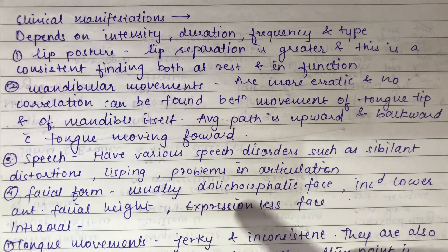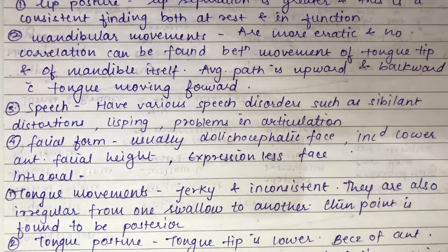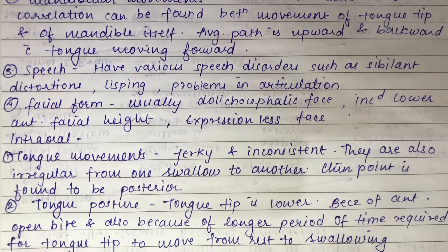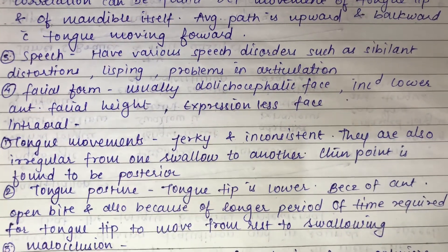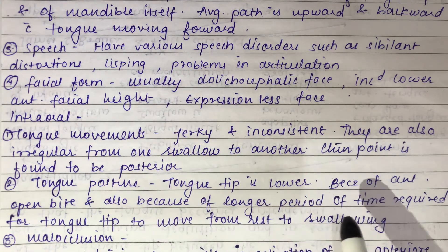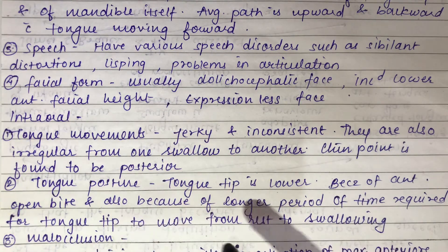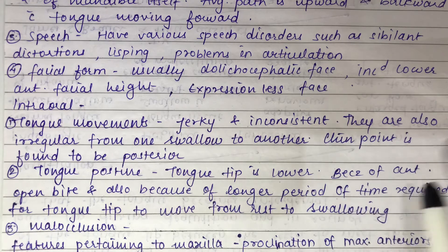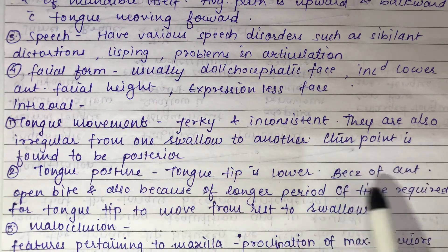Intraoral features include tongue movement that is jerky, inconsistent, and irregular from one swallow to another. The chin point is found to be positioned posteriorly. The tongue tip is lower because of the anterior open bite and the longer time required for the tongue tip to move from rest position to swallowing.